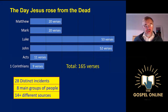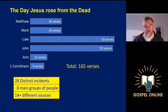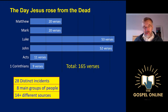The accounts of the resurrection of Jesus appear in all four of the gospels, in the Acts of the Apostles, and there's a short section in 1 Corinthians chapter 15. Altogether there are 165 verses. That sounds like it shouldn't be too difficult to put together, but there are 28 different incidents, eight main groups of people moving around, and accounts from 14 or more different people giving information to the gospel writers and the Apostle Paul.